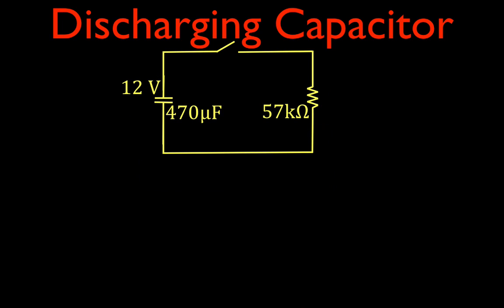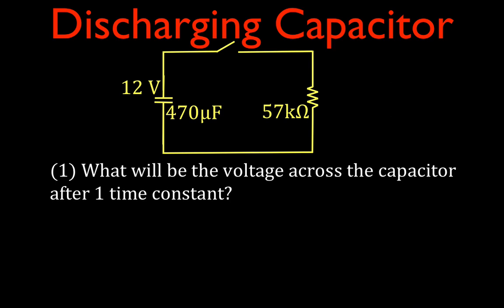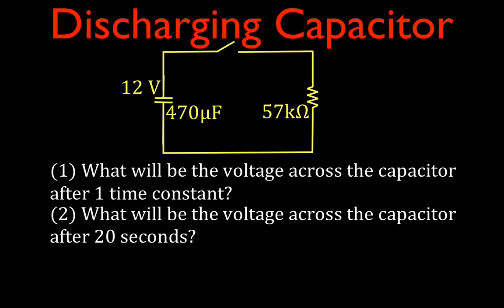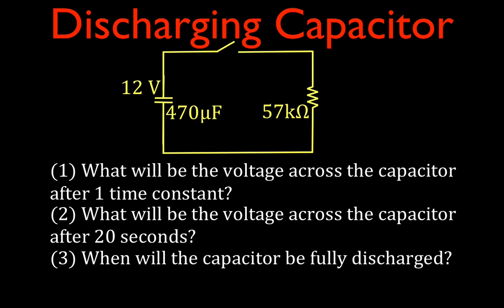These are the three things we want to do in this video. We are going to determine what the voltage across the capacitor will be after one time constant, what the voltage will be after 20 seconds, and then we'll determine when the capacitor will be fully discharged. We're going to do all three of those things using this circuit diagram.